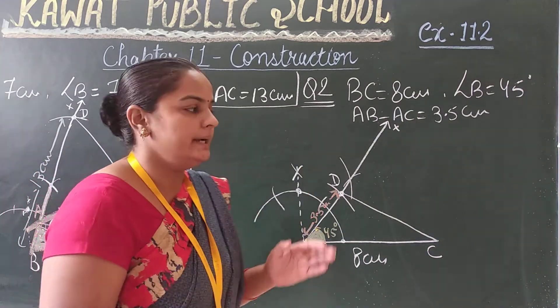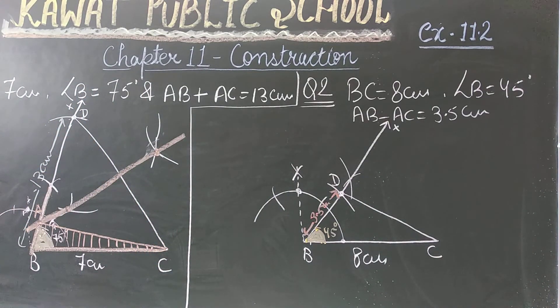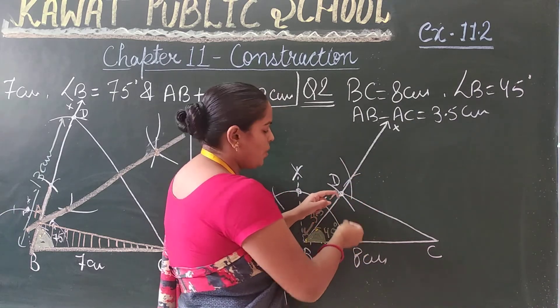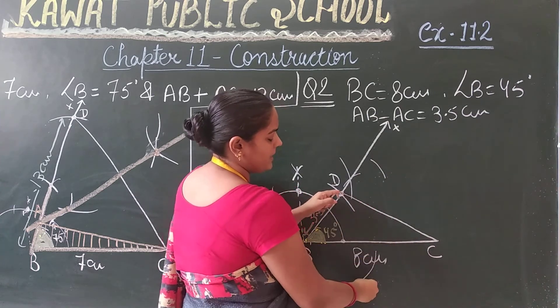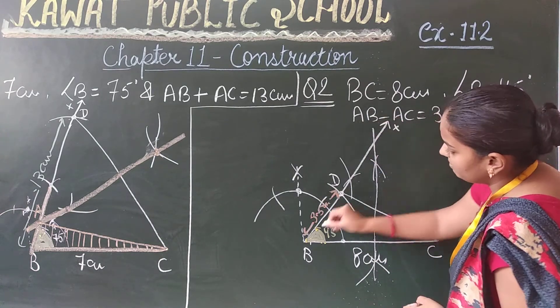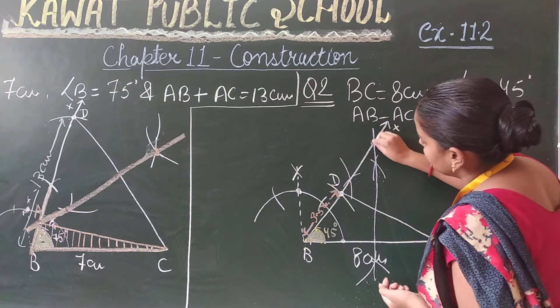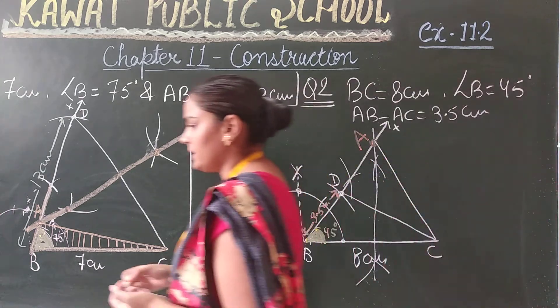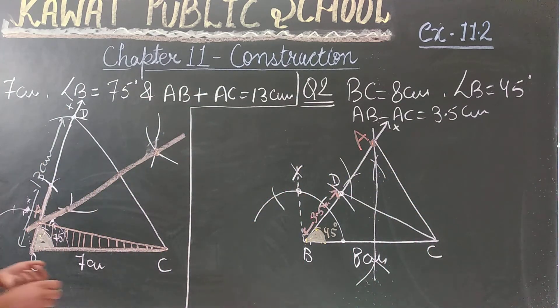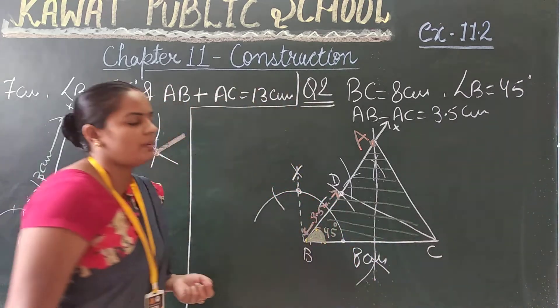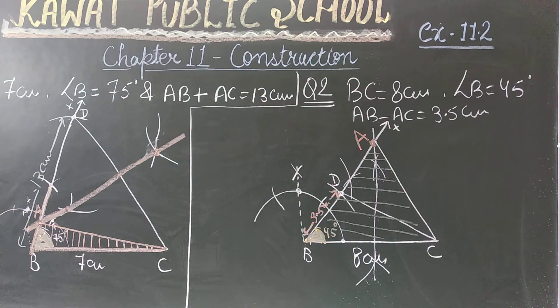Now what do we do? Join CD. Next step, we will draw perpendicular bisector of CD. More than half CD line, draw upper cut and lower cut from both sides. Join the perpendicular bisector. This is point A. This is the required point A. Now join AC. This is the required triangle ABC. I hope this is clear to you.